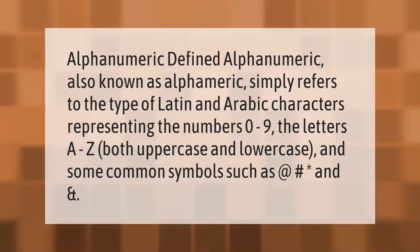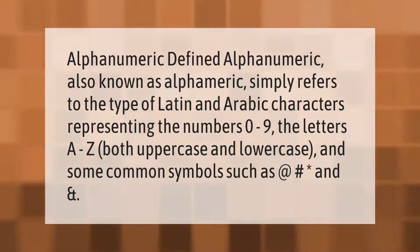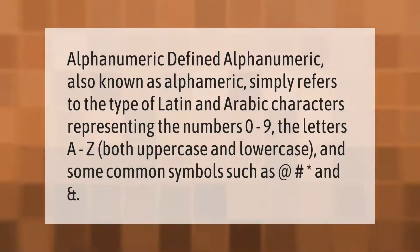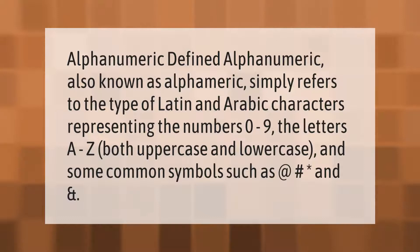Alphanumeric, also known as alphameric, simply refers to the type of Latin and Arabic characters representing the numbers 0 to 9, the letters A to Z both uppercase and lowercase, and some common symbols such as at, hash, and asterisk.